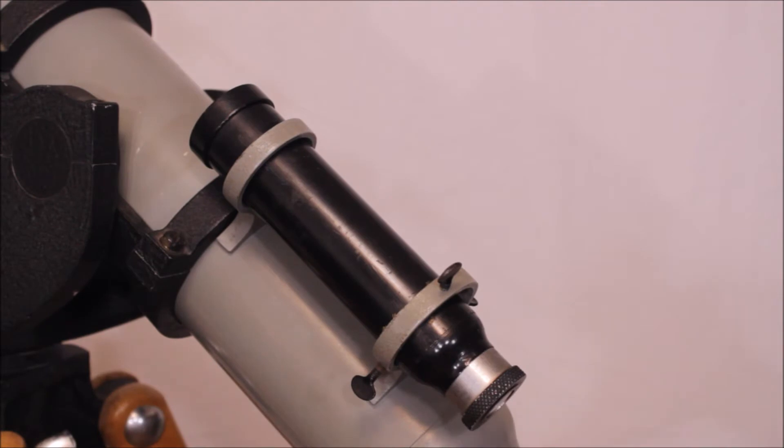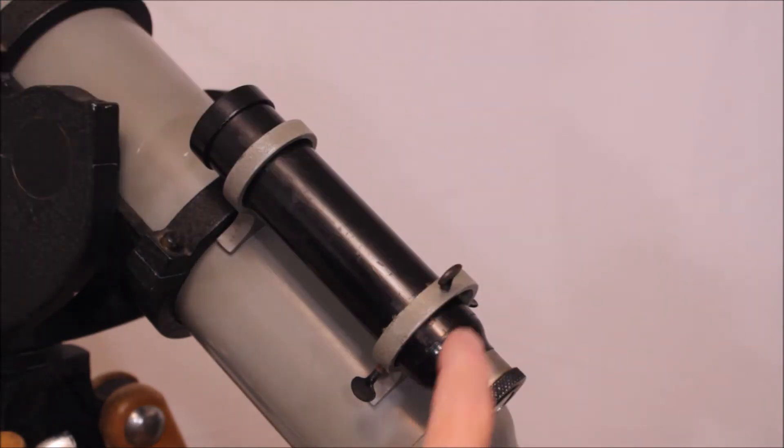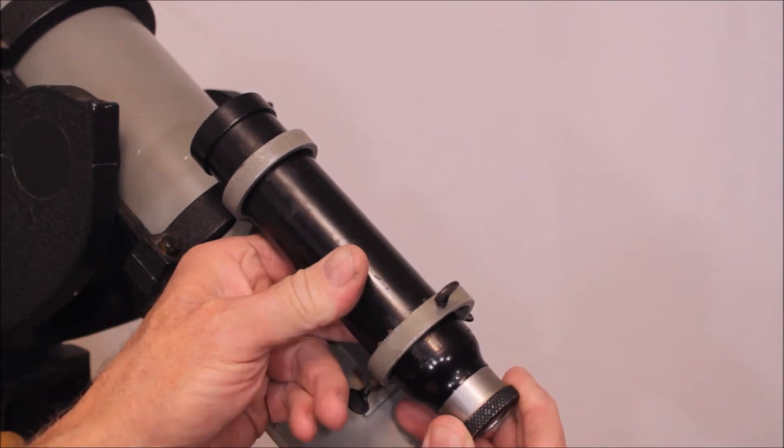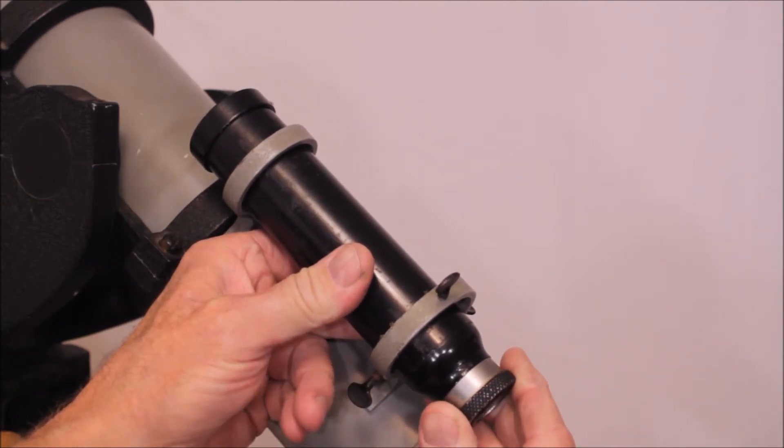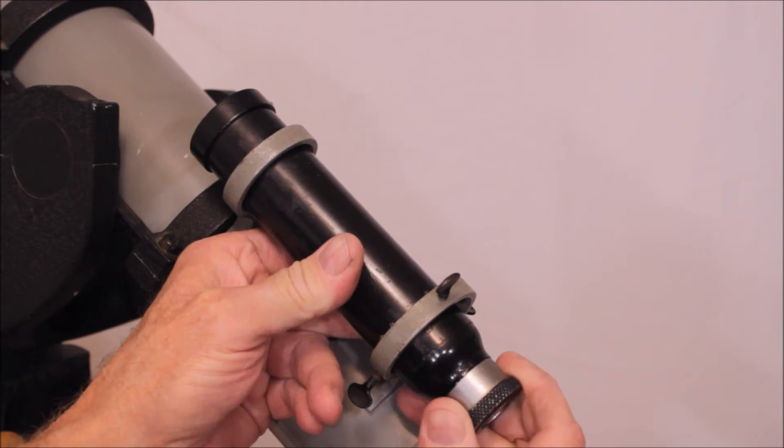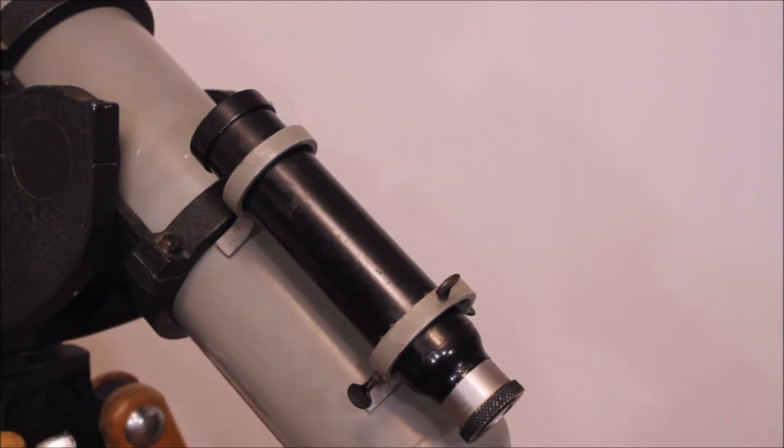Here's a better look at the finder. Kind of an interesting bottlenose configuration. This thing slips in here. So that slips in and out for focus. Pretty good friction fit there.